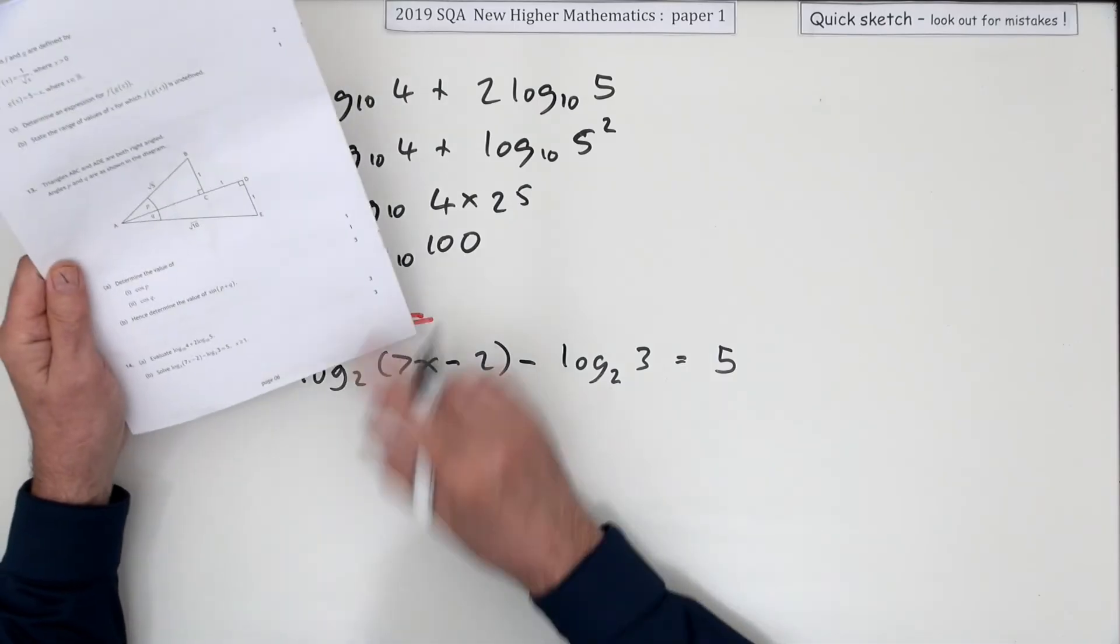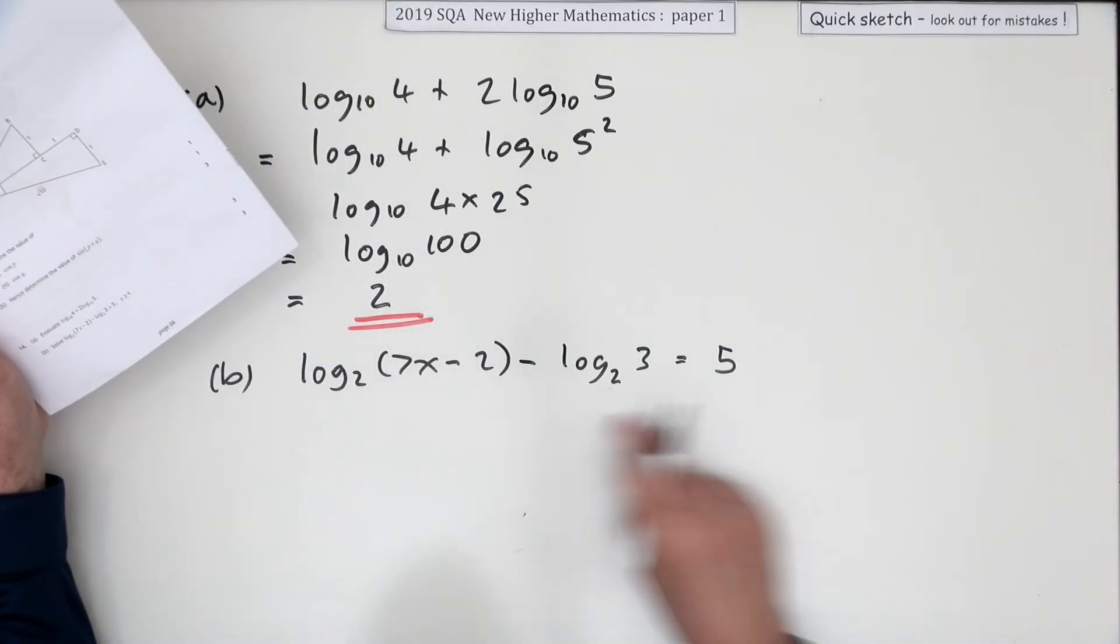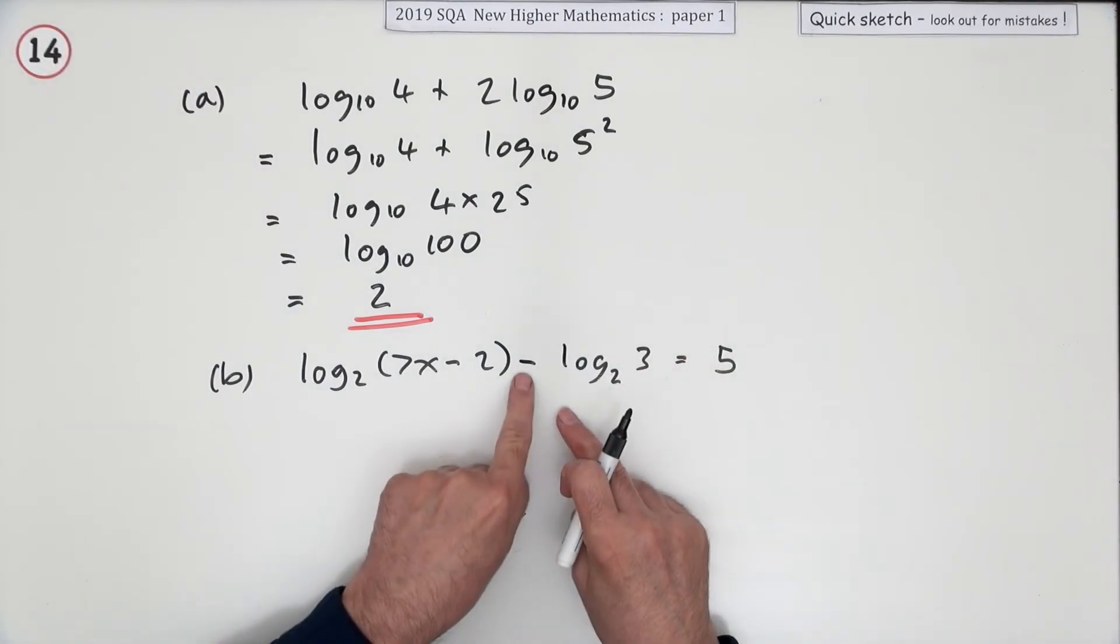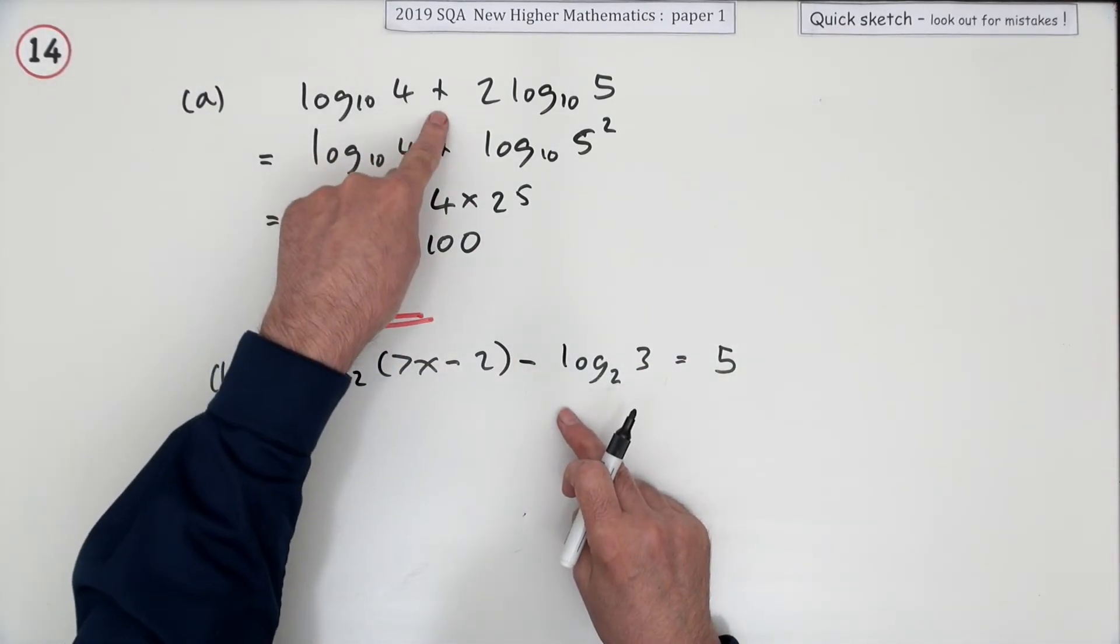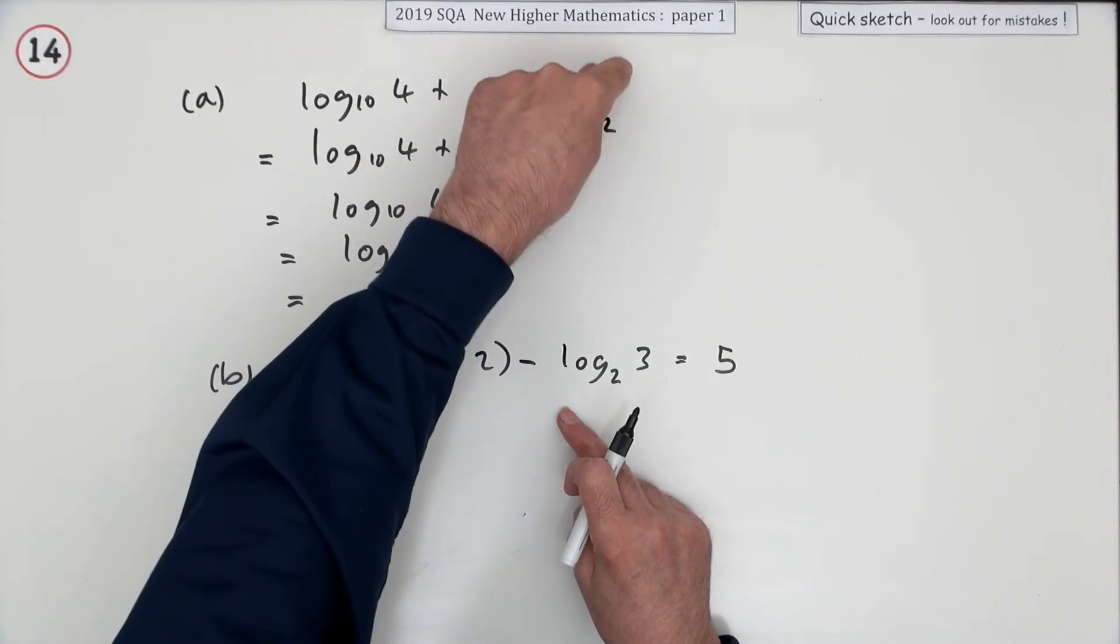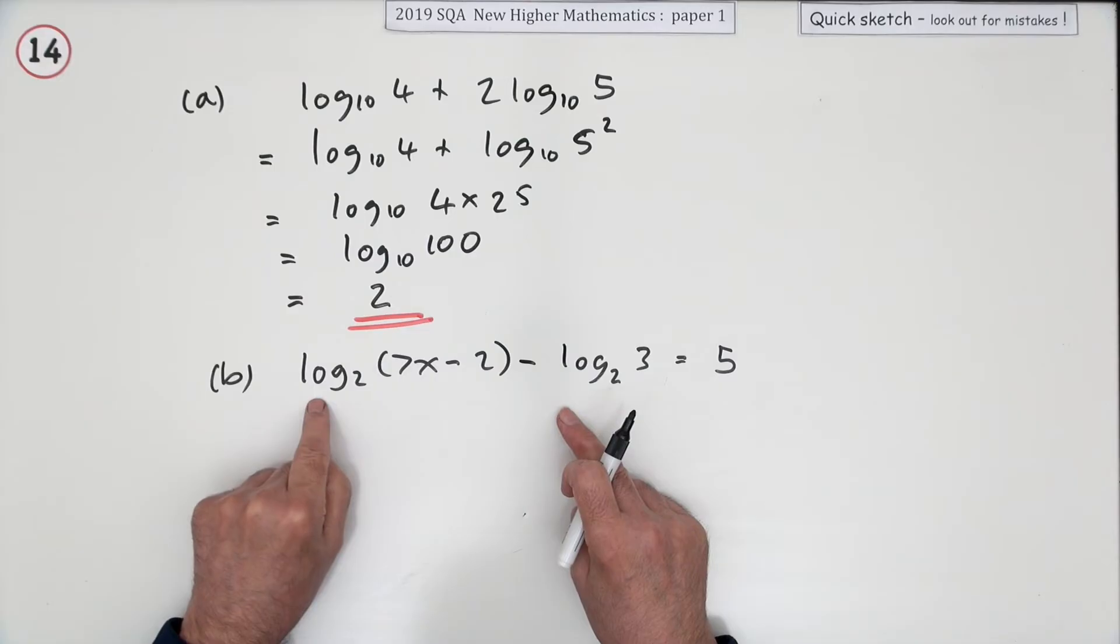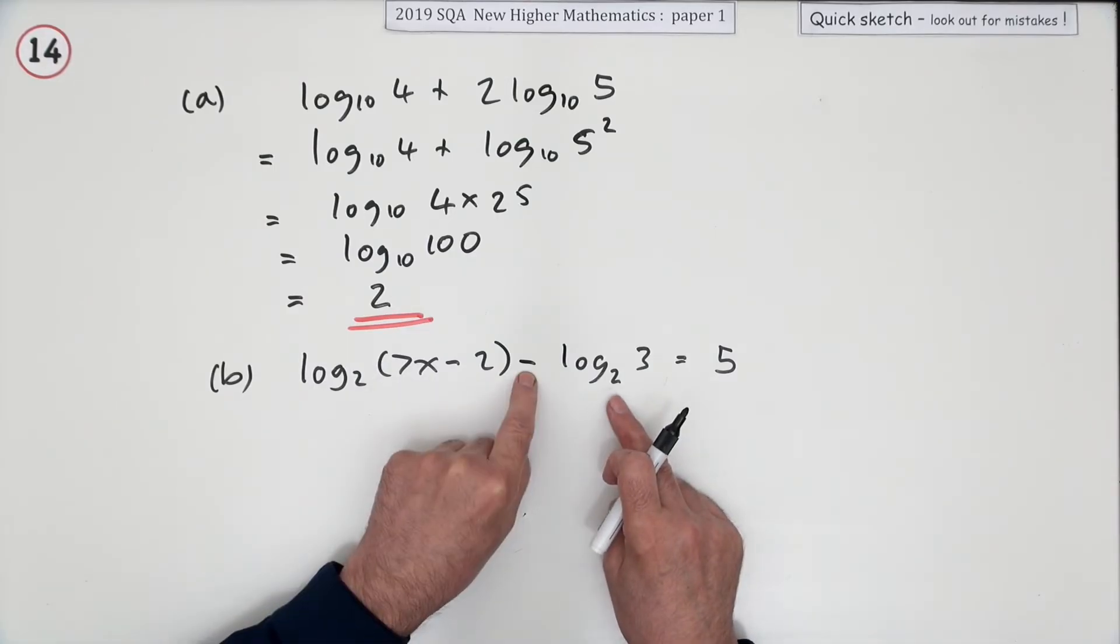Then part b, for another three marks, solve this equation involving logs. It's much the same as question one, though this time we've had the adding logs that's the product, we've had the business about the power going in front as a multiple, and now it's the subtract one. If it's the same base and you're subtracting them, then that will be the logarithm of the quotient of this divided by that.